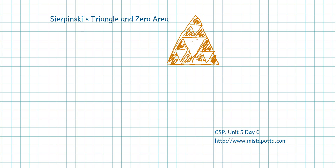If I were to take three fourths and raise it to the fifth power, that's going to give me 243 over 1024. As I keep multiplying, I'm going to get a smaller answer than the time before. This eventually tends towards zero as this number increases without bound.